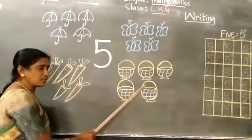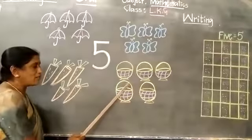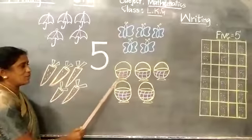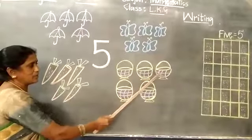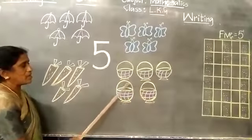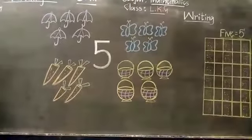How many baskets are there children? There are 5 baskets. 1, 2, 3, 4, 5. 5 baskets. Very good children.